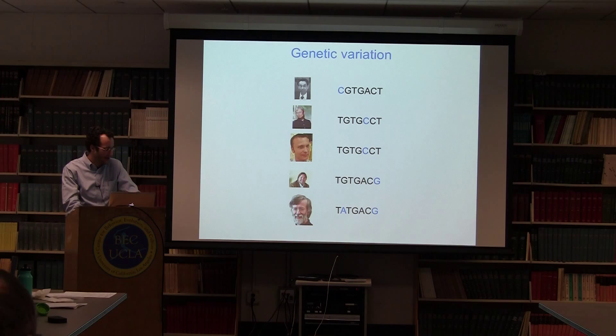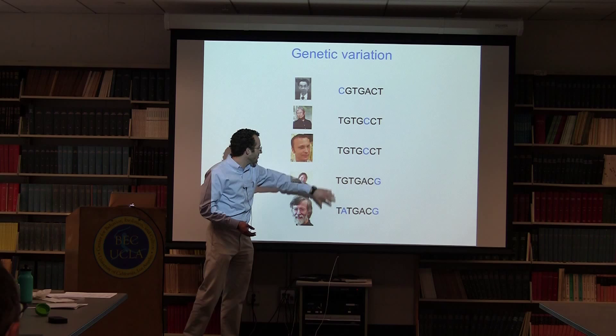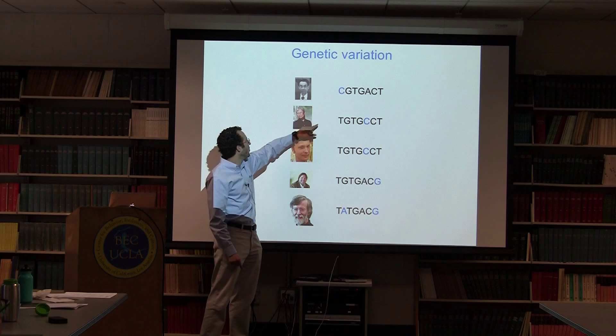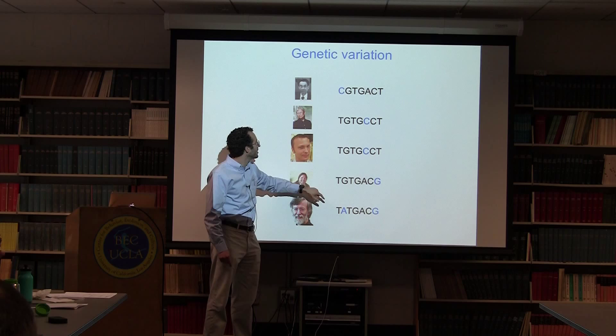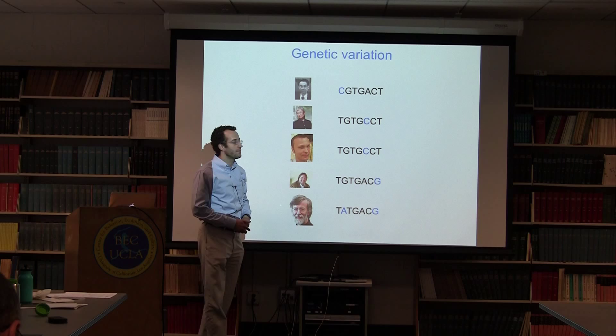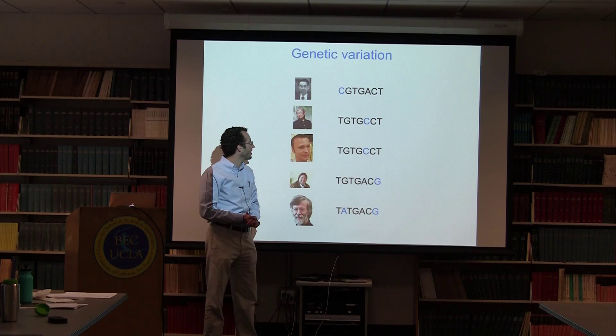By way of introduction, if we take the genomes or the sequence of DNA from a variety of individuals and line them up together, we might see a pattern like this. There will be some sites in the genome where some individuals carry one particular base or nucleotide — in this case, Motoo Kimura carries the C nucleotide — while others carry a different one, the T nucleotide. These particular sites are called single nucleotide polymorphisms, or SNPs, and they will be the focus of my talk. On average, between any two genomes there will be about one of these base changes every thousand or so bases.